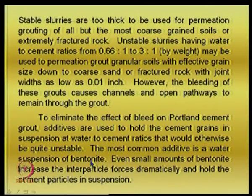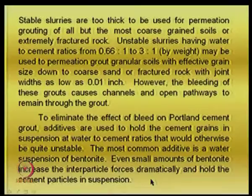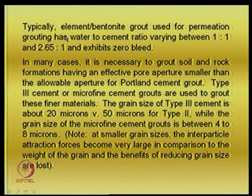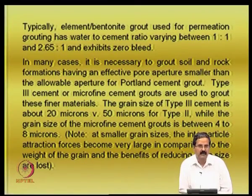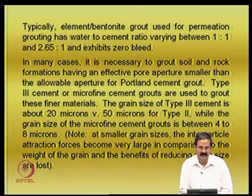To eliminate the effect of bleeding on Portland cement grout, additives are used to hold the cement grains in suspension at water-cement ratios that would otherwise be unstable. The most common additive is a water suspension of bentonite. Even small amounts of bentonite dramatically increase inter-particle forces and hold the cement particles in suspension. Typically, cement-bentonite grout used for permeation grouting has a water-cement ratio between 1:1 and 2.65:1 and exhibits zero bleed — the presence of bentonite takes up the water so it does not flow out easily.